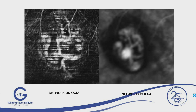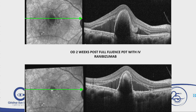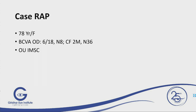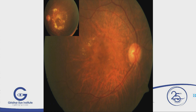OCTA shows almost similar findings to ICG, so OCTA is sometimes as good as ICG in identifying polyps. Following full-fluence PDT with injection, the patient gradually settled and is doing well. Post-PDT, the polyp has regressed — the left image is pre-treatment and the right is post-treatment. Both OCT and OCTA are very useful in follow-up.